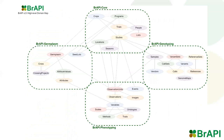BrAPI version 2 was released in March of 2020. Here's a high-level map of all the different data structures BrAPI can handle, organized into four general modules. BrAPI Core deals with trial, organization, and management. BrAPI Germplasm deals with germplasm and accession management. BrAPI Phenotyping deals with trait and observation data. And BrAPI Genotyping deals with samples, markers, and sequence data.